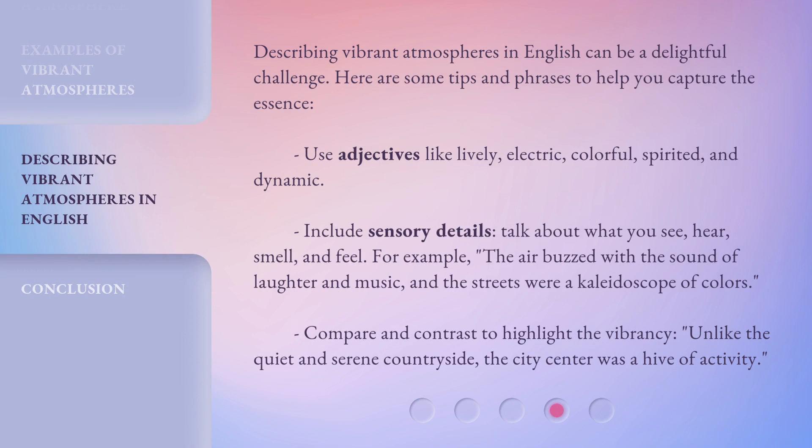Describing vibrant atmospheres in English can be a delightful challenge. Here are some tips and phrases to help you capture the essence. Use adjectives like lively, electric, colorful, spirited, and dynamic. Include sensory details — talk about what you see, hear, smell, and feel.